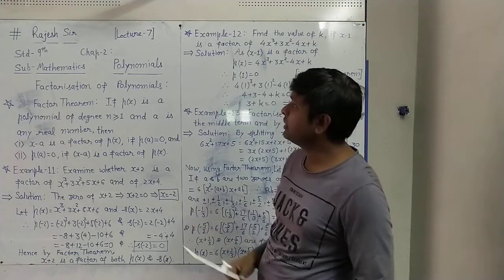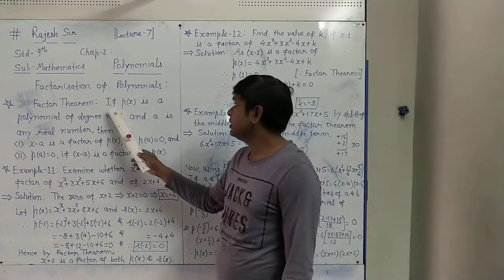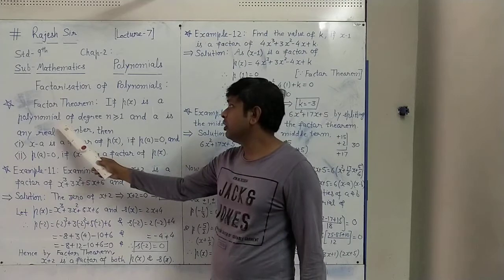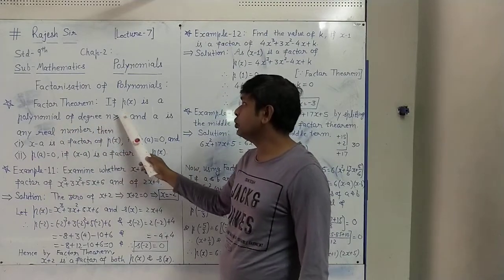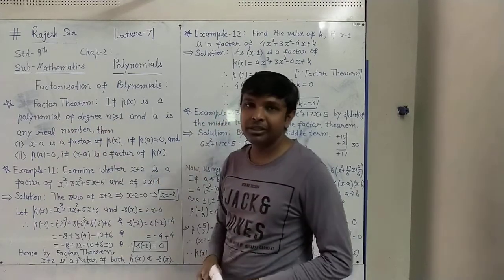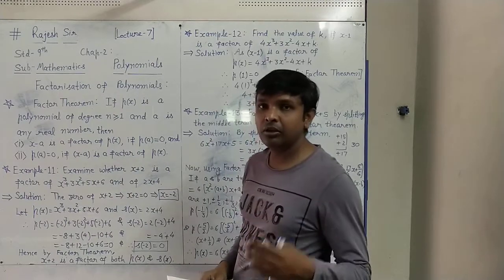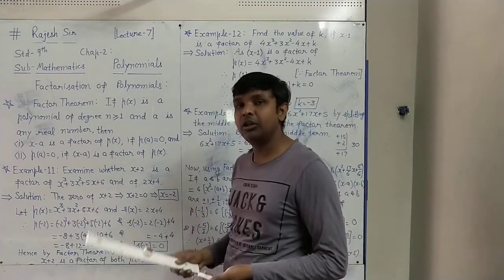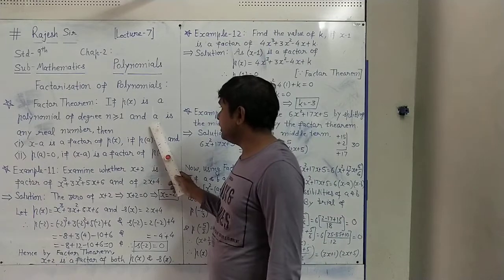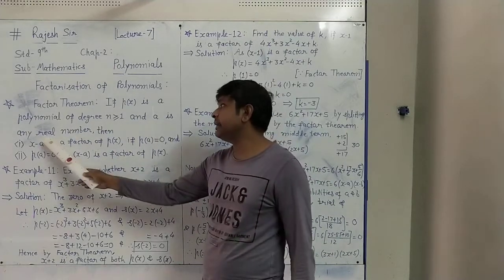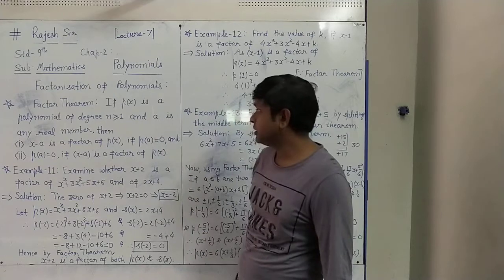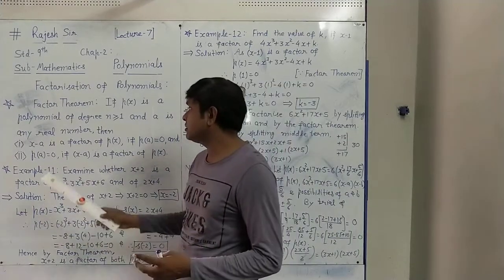Factor Theorem — what is it? Can we understand? If P(x) is a polynomial of degree n greater than or equal to 1, the polynomial degree may be 1 or 2 or 3 or 4, and 'a' is any real number, then we have two things.